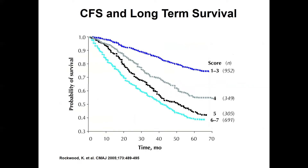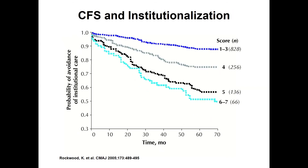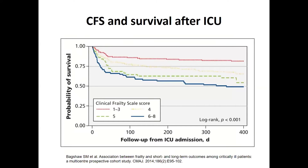Frailty is associated with adverse outcomes. Looking at the original Clinical Frailty Scale publication, the survival curves separated significantly by score, with a substantial difference at 70 months between those in more robust categories one to three versus those at five, six, and seven. Institutionalization curves also separate significantly. Sean Bagshaw's work demonstrated a similar pattern for people admitted to intensive care units, showing significant separation in survival comparing the more robust group — one to three — to those more frail at six to eight.